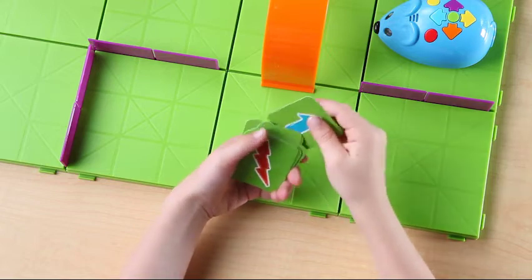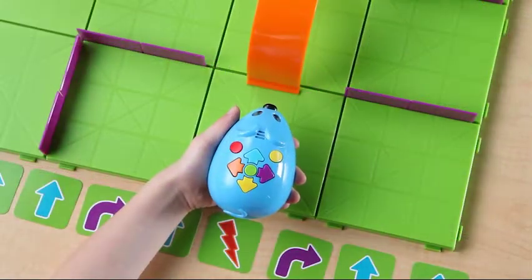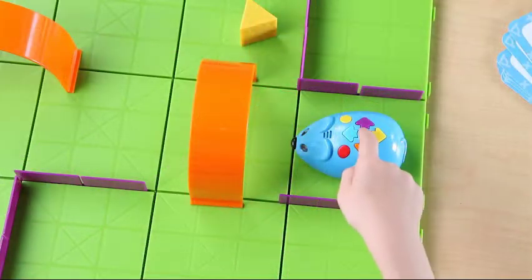Add a fun action step along your path and Colby will perform one of three random actions. When you want to program Colby for his next maze, just press the yellow clear button and he's ready to go again.